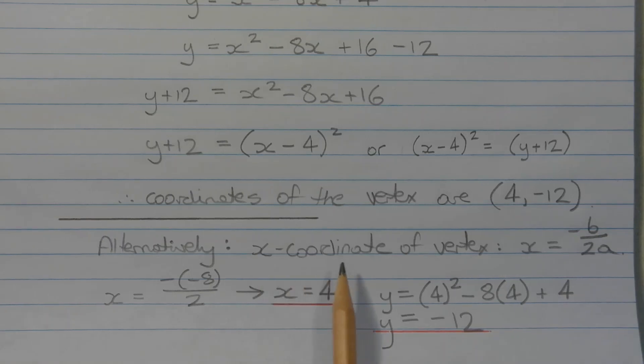Alternatively, we can find the x-coordinate of the vertex using the formula x equals negative b over 2a, where b is equal to negative 8, and a is equal to 1. So substituting negative 8 and 1 for b and a respectively, we get x is equal to negative negative 8 over 2. And that simplifies to x equals 4, which corresponds to the x-coordinate of the vertex we found here.